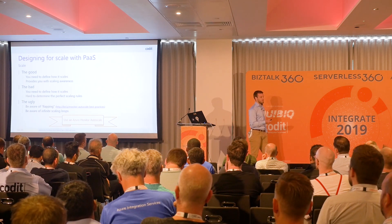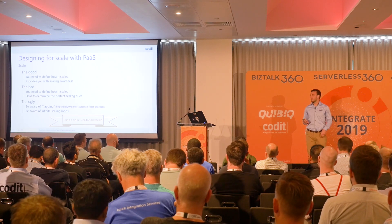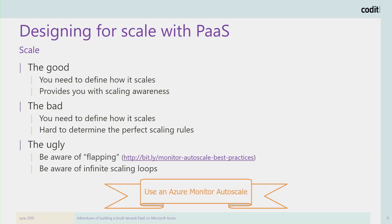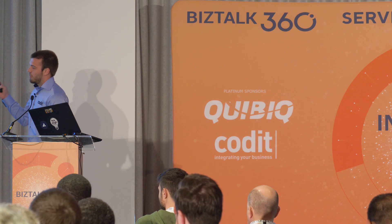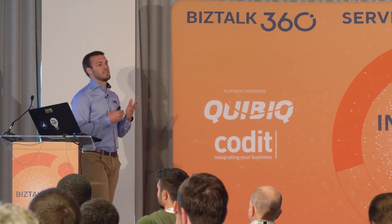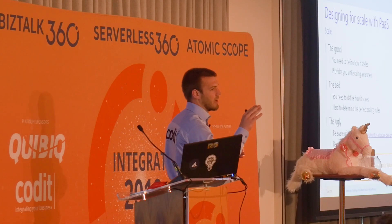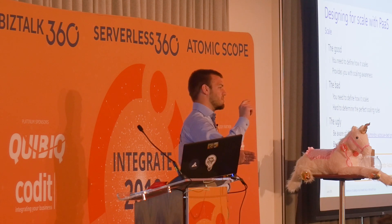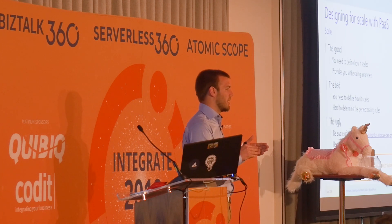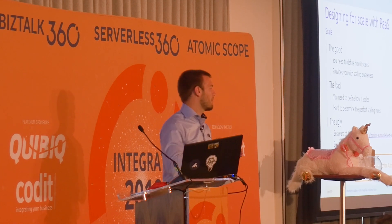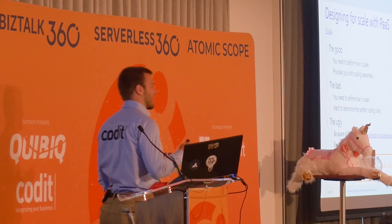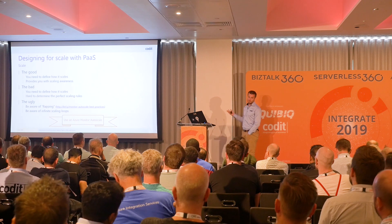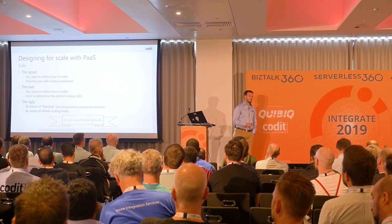What's a good metric to auto-scale on? Is it 10 messages? 100? 200? We don't know — it's a lesson you learn by doing. You need to tweak those rules over time, and as your platform grows, those rules might change. Nothing is written in stone. You also need to be aware of flapping: if I define scale up at 200 messages and scale down at 150, there will always be an area where the auto-scaler oscillates up and down. It's very hard to find good scaling rules — and infinite scaling rules can burn your money.